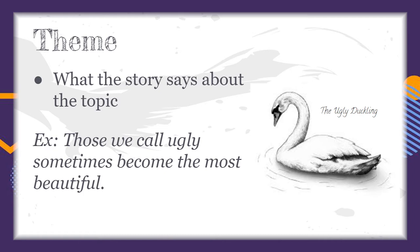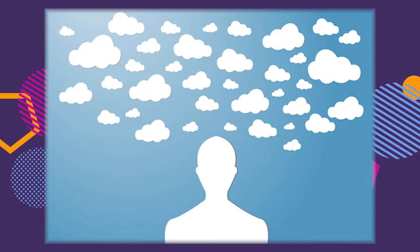If you identify the topic first, usually you can come about what the theme is with a little bit of deep thought. That's not to say that it's always easy. You will read poems that completely confuse you. Out of all the forms of writing, poetry takes the most interpretation, meaning that sometimes you really have to dig into that topic to understand what the theme is.